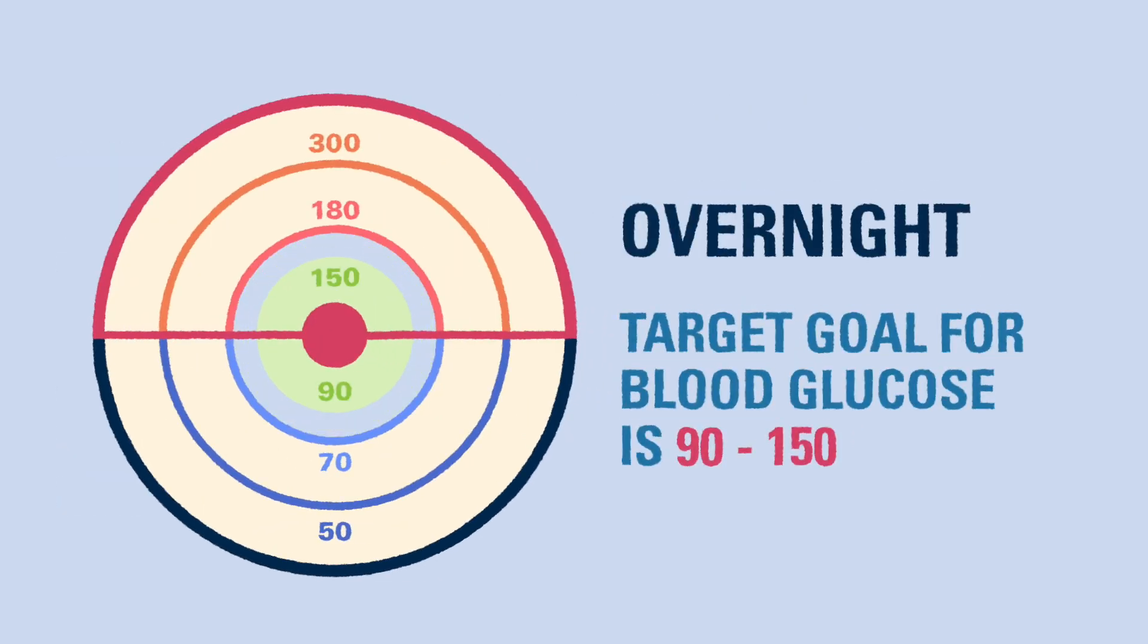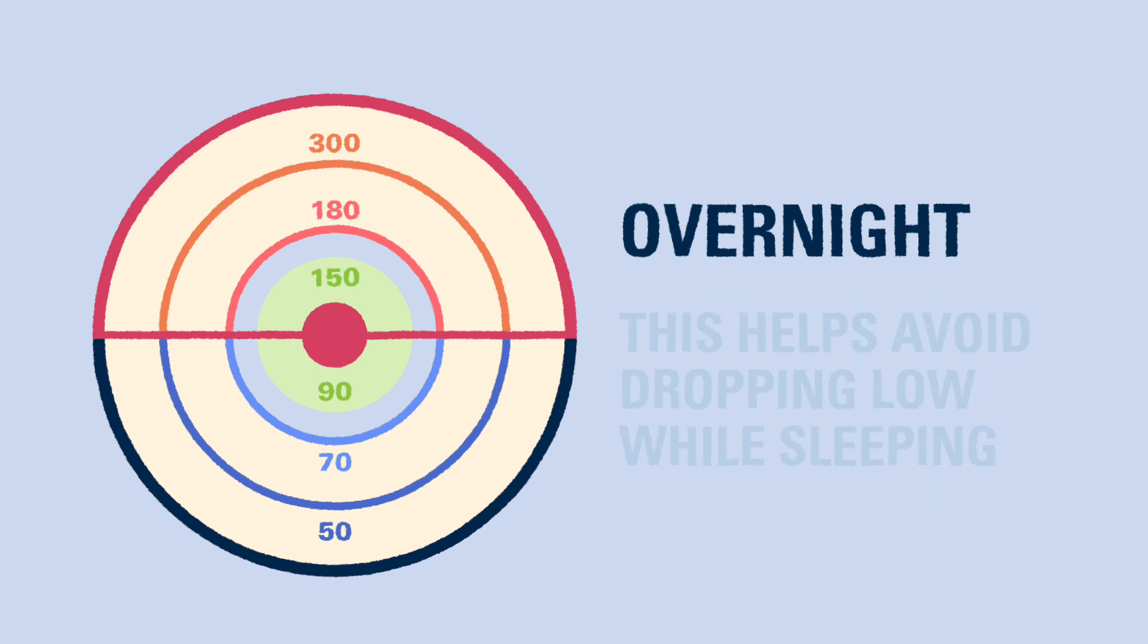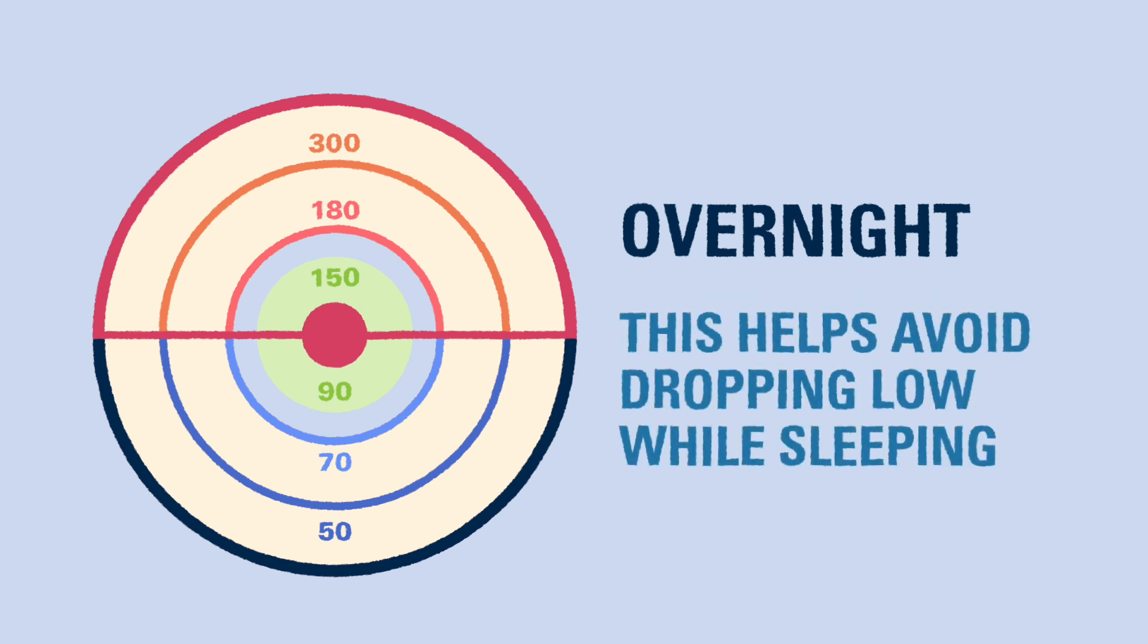Overnight, we aim for the blood sugar to be somewhere between 90 to 150. We recommend reaching at least 90 to 100 before going to sleep to avoid the possibility of dropping low overnight.